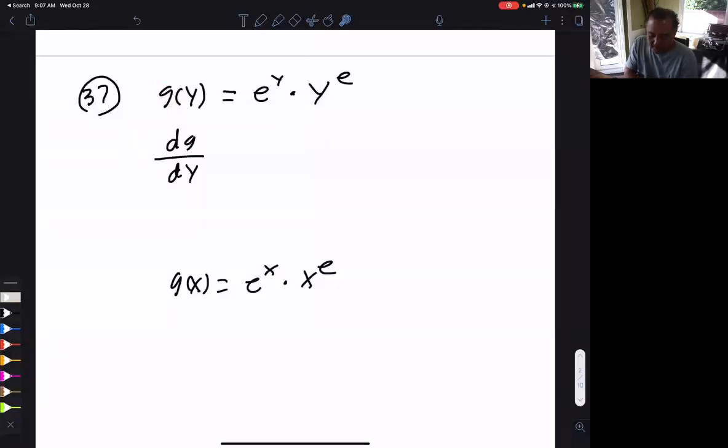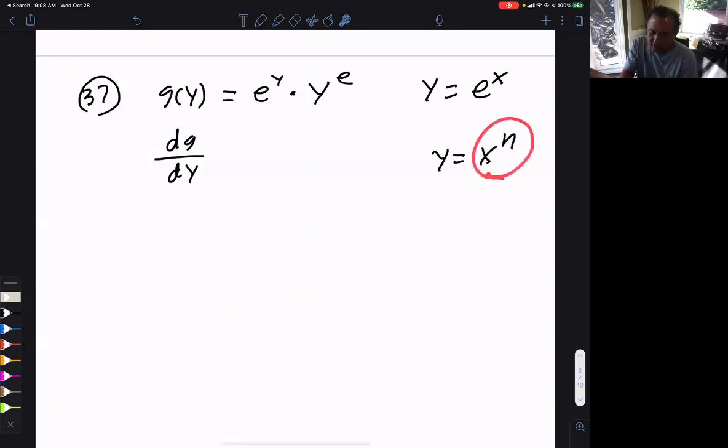In this case, your variable is y, and that throws you off. You need to get used to the fact that variables are just variables. You can call it anything you want. So what do we have? We have two functions. Let me clear that. y equals e to the x, and y equals x to the n.